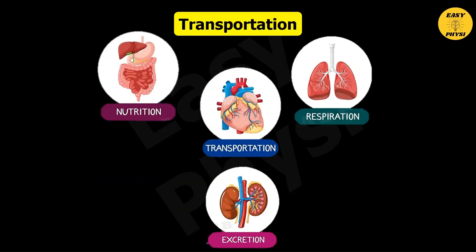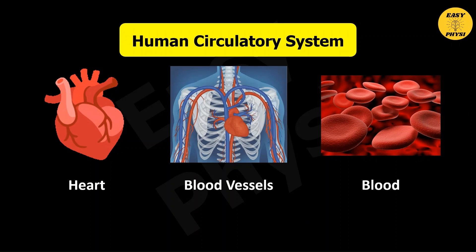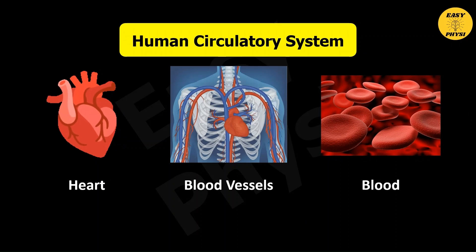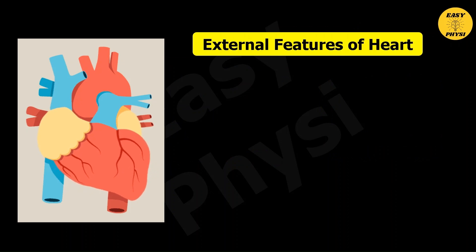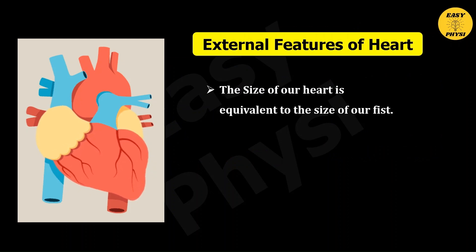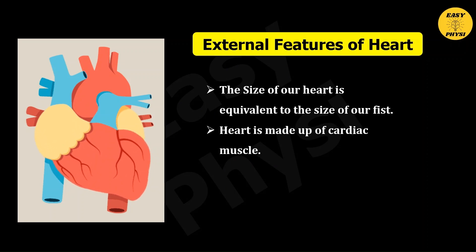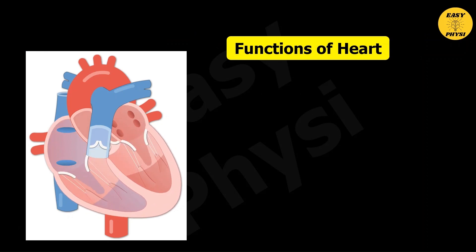Transportation is an important life process. Materials required for nutrition, respiration, and excretion are supplied by the transport system. The human circulatory system consists of three parts: Heart, Blood vessels, and Blood. The size of our heart is equivalent to the size of our fist, and it is made up of cardiac muscle.